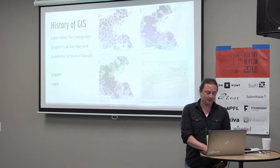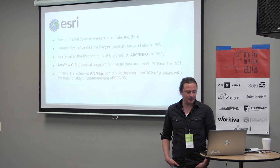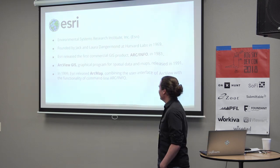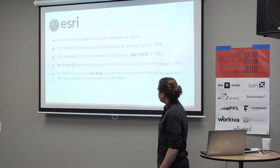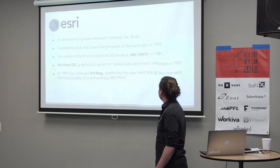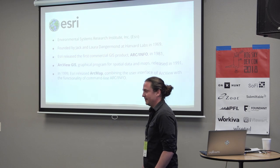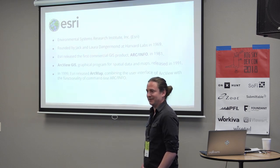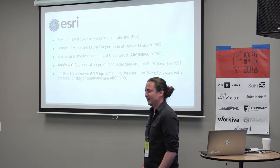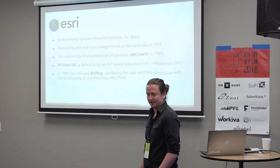At Harvard in 1969, Esri was founded by someone named Jack Dangermond. Esri stands for the Environmental Systems Research Institute — he founded it with his wife. Later in 1981, they released the first commercial GIS product. The interesting thing is Esri has essentially had a monopoly on GIS software from that point until now. It's incredible in the software world that the first company to create a commercial product essentially maintains a monopoly for 40 years.